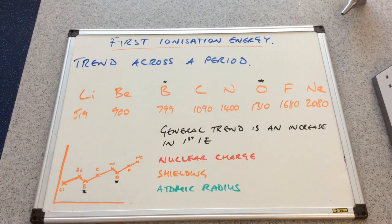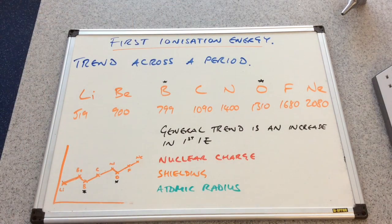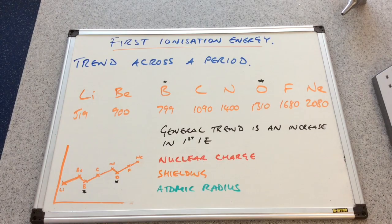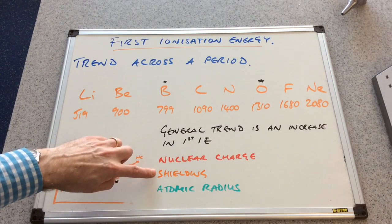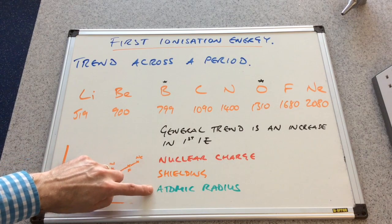We'll just quickly explain that before we go into these two anomalies here, boron and oxygen in the case of period 2. Remember the three factors that we must include: nuclear charge, shielding, atomic radius.